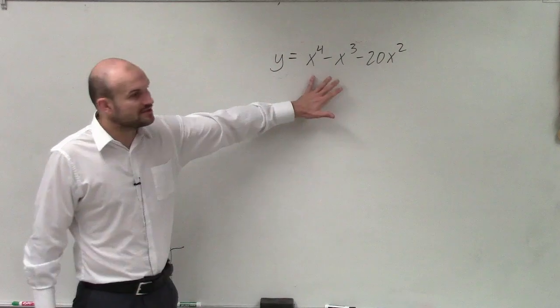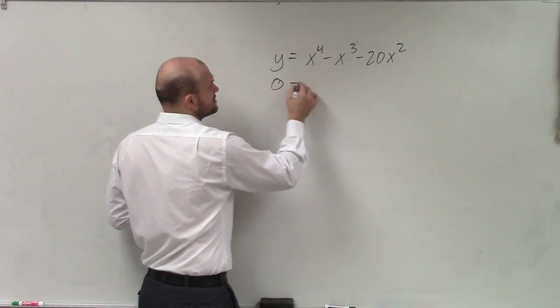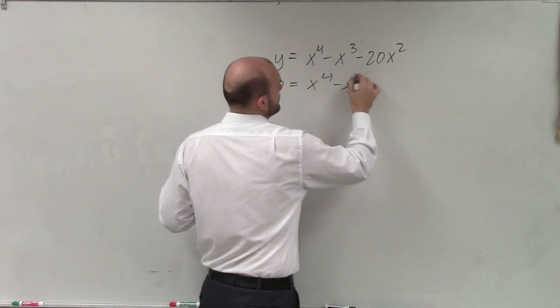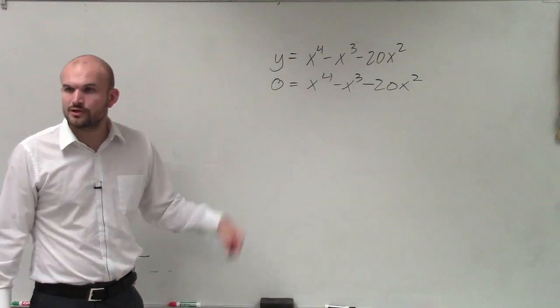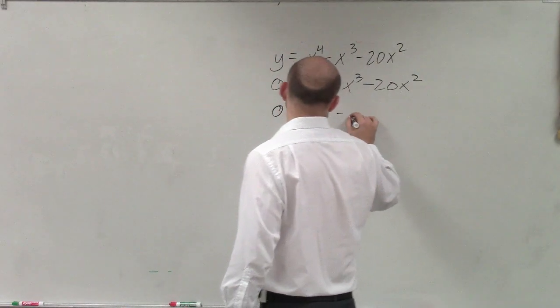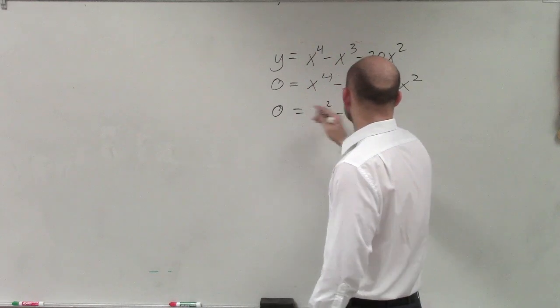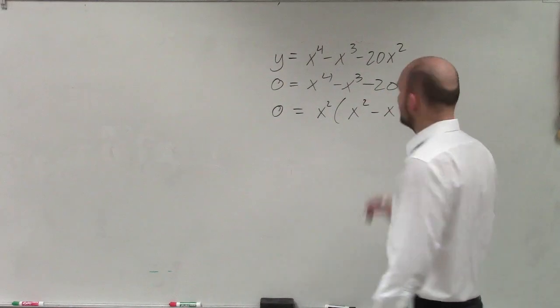To find the values of x, first set it equal to 0. Then see if the terms have a common factor. They do - x squared is in common. Factoring out x squared gives us 0 = x²(x² - x - 20).